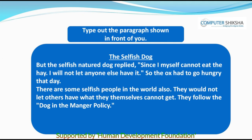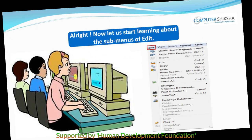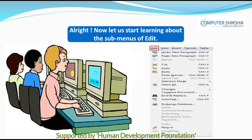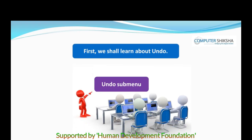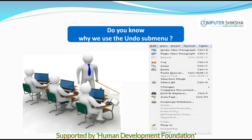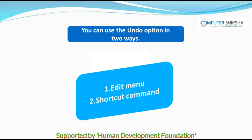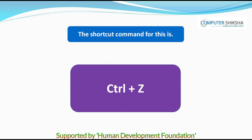Type out the paragraph being shown here. Now let us start learning about the sub-menus of Edit. First, we shall learn about Undo. Do you know why we use Undo? By using Undo, you can remove any work, one after the other, that you had done on your page. For example, you can remove a word or even a picture. You can use Undo in two ways: from the Edit menu or by using the shortcut command Control plus Z.